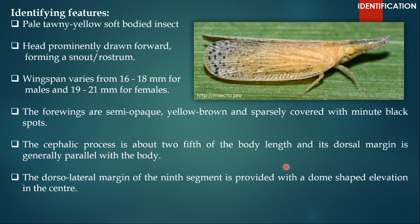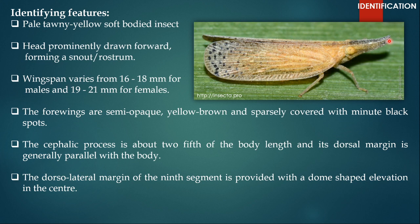How to identify Pyrilla purpusilla? It is a very small insect. Its color is pale tawny yellow, and it has small minute black dots all over its forewings. The head is prominently drawn forward and it forms a snout or a rostrum. The wingspan varies from 16 to 18 millimeters for males and 19 to 21 millimeters for females, so females are a little larger than males. The forewings are semi-opaque and yellow-brown in color. The cephalic process is about two-fifths of the body length and its dorsal margin is generally parallel to the body.